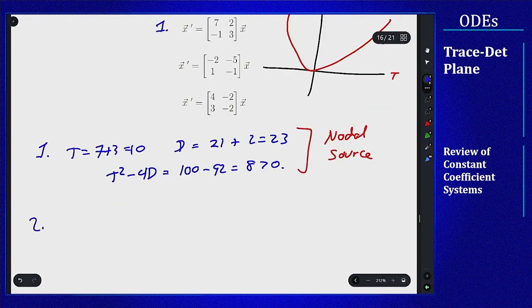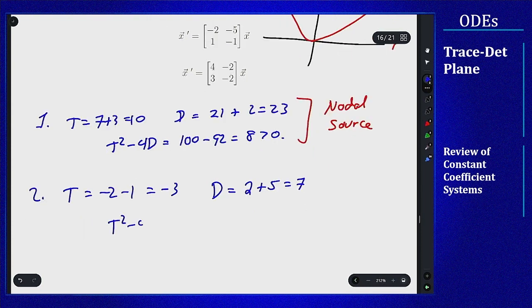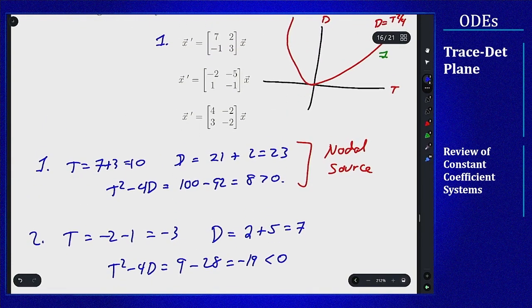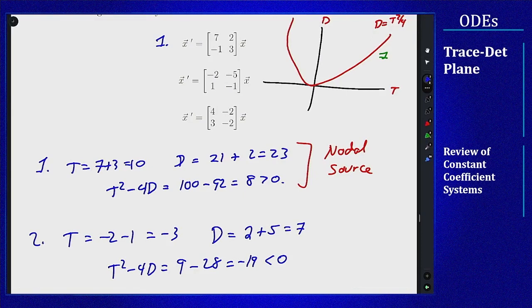For number 2, we have a trace of negative 2 minus 1, which is negative 3, and a determinant of 2 plus 5 or 7. So t squared minus 4d is 9 minus 28, which is negative 19 — negative. We have a negative discriminant so we're complex, we're above the parabola, and since trace is negative, that means I am in the region that is a spiral sink.